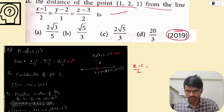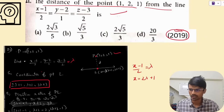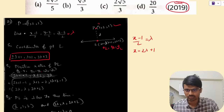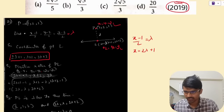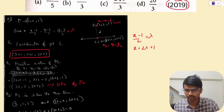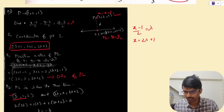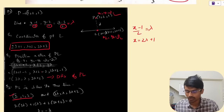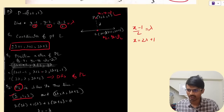When (x−1)/2 = λ, then x = 2λ+1. So the coordinates of point L are (2λ+1, λ+2, 2λ+3). The direction ratios of PL are (x2−x1, y2−y1, z2−z1): with P = (1, 2, 1) and L = (2λ+1, λ+2, 2λ+3), the direction ratios of PL are (2λ, λ, 2λ+2). The vector parallel to the line is (2, 1, 2).